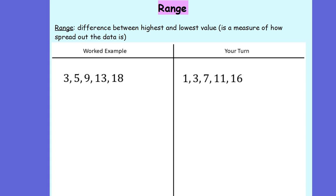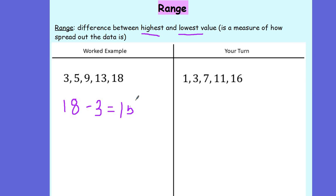I'll go through an example and then there'll be one for you to do. To find the range of this set of values, I need to find the difference between the highest and the lowest value. The highest is 18, the lowest is 3. So to find the difference, I just need to do 18 subtract 3, which gives me 15. Over to you guys in your dark blue books — can you find the range of this set of values please? The highest number is 16, the lowest is 1. So I've got 16 subtract 1, which tells me the range is 15.